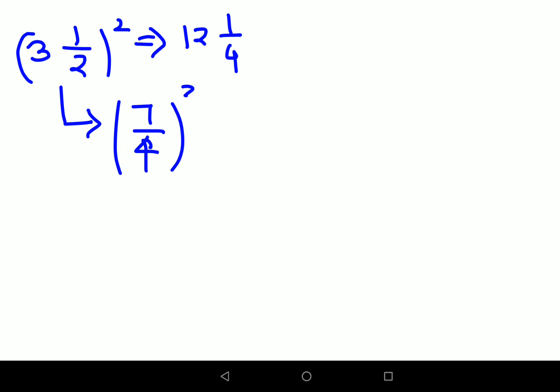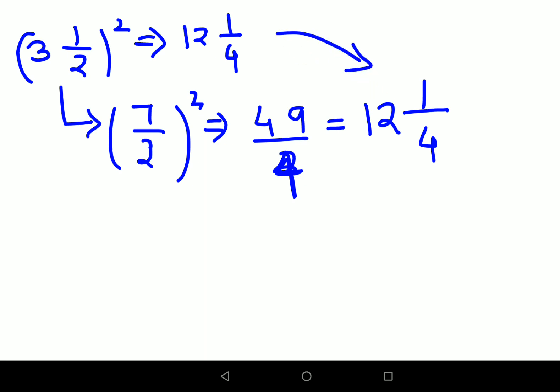Sorry, my bad. It is actually 7 upon 2. So we had 7 upon 2 the whole square. That comes out to be 49 upon 4. And as we know, when you divide 49 by 4, you get the quotient as 12, because 4 into 12 gets you 48. And when you take 48 from 49, you get the remainder as 1 and your 4 gets continued to be your denominator.